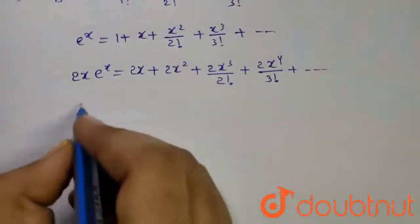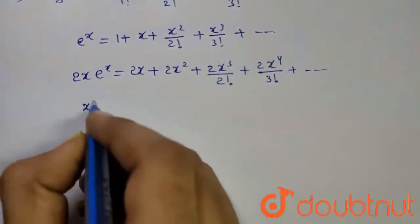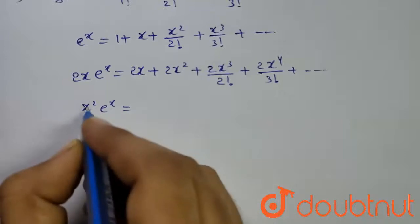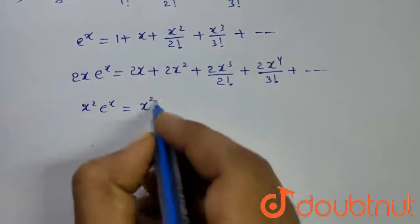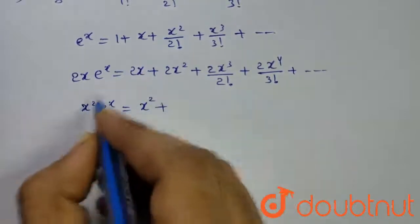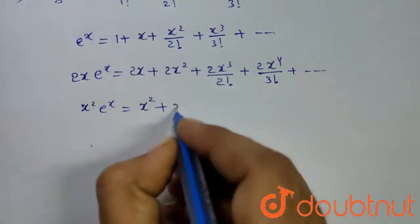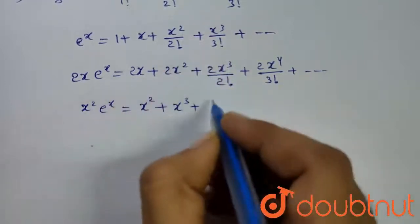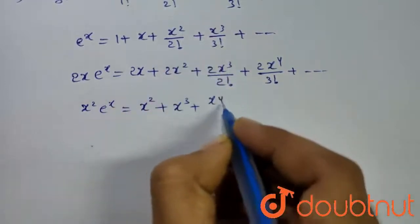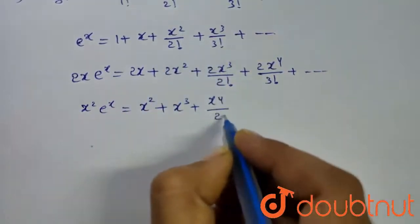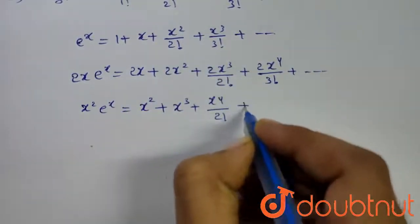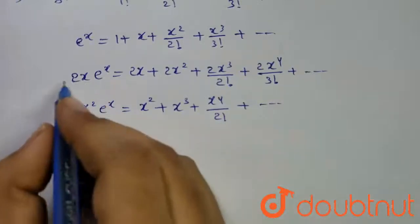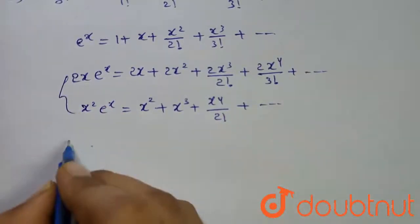Again consider x squared·e^x: x squared into 1 is x squared, plus x squared into x is x cubed, plus x to the power 4 divided by 2 factorial, and so on. If we add these two equations,